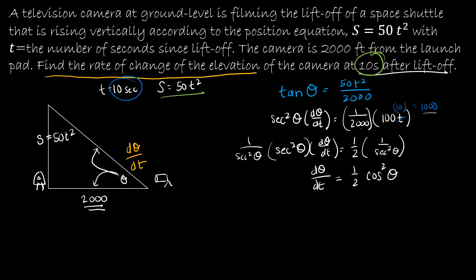I can use the Pythagorean theorem to determine the hypotenuse at 10 seconds. At 10 seconds, s(10) = 50·10² = 5000. So 5000² + 2000² = c². 25,000,000 + 4,000,000 = c², so c = √29,000,000.